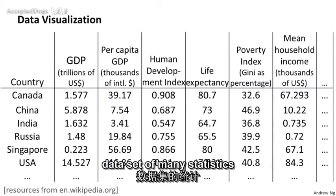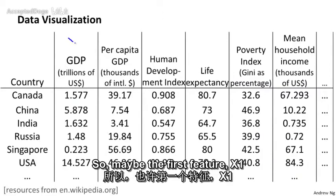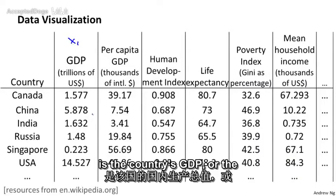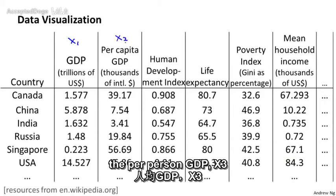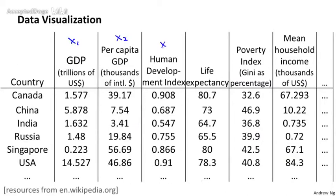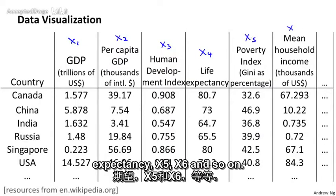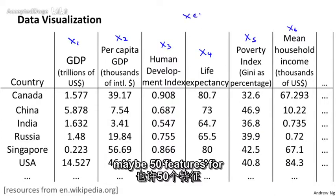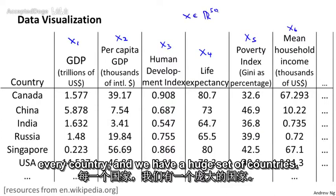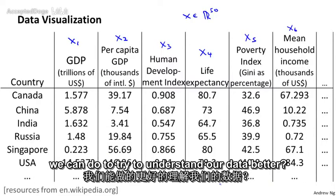Let's start with an example. Let's say we've collected a large data set of many statistics and facts about different countries around the world. So maybe the first feature x1 is the country's GDP, or the gross domestic product. x2 is the per capita, meaning the per person GDP. x3 is human development index, life expectancy, x5, x6, and so on. We may have a huge data set like this with maybe 50 features for every country, and we may have a huge set of countries.